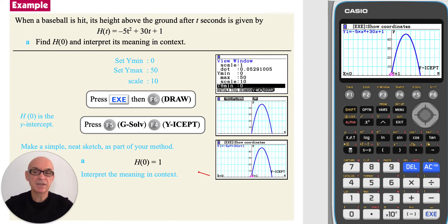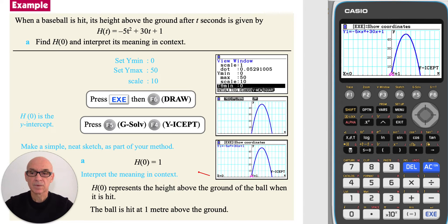Interpreting the meaning in context, h of 0 represents the height above ground of the ball when it is hit. So the ball is hit at 1 meter above the ground.